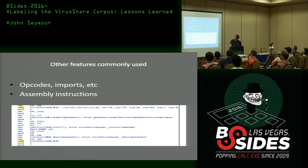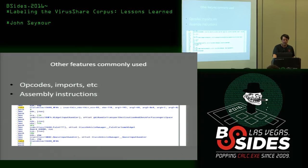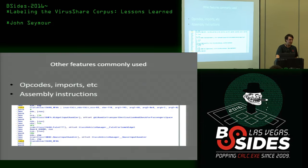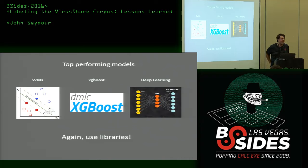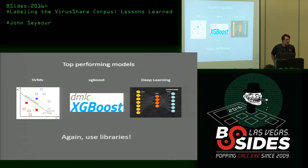Some other features commonly used: opcodes, imports, assembly instructions — people are just trying to find data everywhere in executables. Then some of the top performing models in this domain: support vector machines are kind of old school but robust against overfitting. There's XGBoost — extreme gradient decision tree boosting — which pretty much kills everything. Think of it as random forest on super steroids. And deep learning is a cool hot topic people are starting to use in this domain too. There are libraries in Python for all of these.